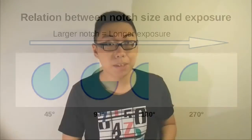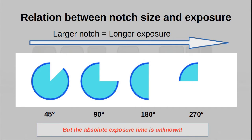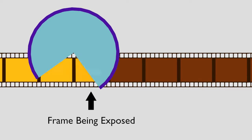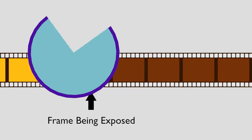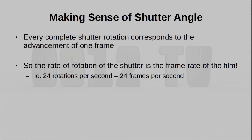So we can sort of piece together why the size of the notch matters. The wider the notch, the longer the film will actually be exposed. Despite that, the size of the notch actually doesn't say anything about the absolute shutter speed, because we don't know how often the shutter actually rotates. Now, we know that for a complete revolution, you have an exposure time as well as time for one square of film to advance. So therefore, if we were to have one full rotation, that should correspond to the exposure of one frame. So in fact, the rate at which the shutter spins is just the frame rate of the film.